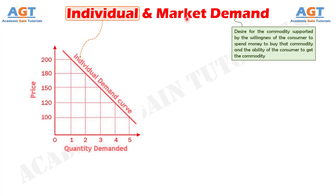Individual demand implies the quantity of a good or service demanded by an individual household at a given price and at a given period of time. For example, the quantity of detergent purchased by an individual household in a month is termed as individual demand.